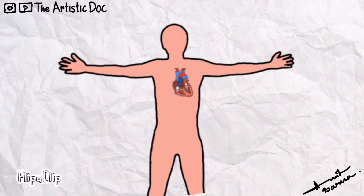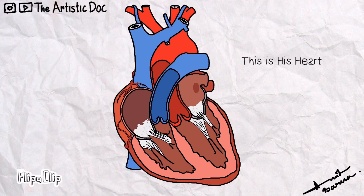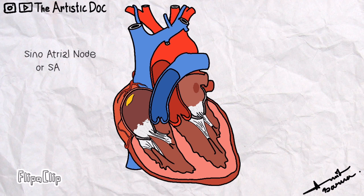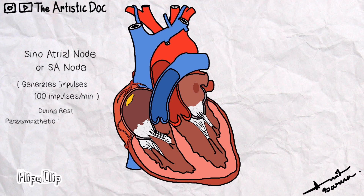This is Shanthan and this is his heart. Now see the parts of the conduction system inside his heart. This is the sinoatrial node or SA node. It is situated at the junction of the crista terminalis in the upper wall of the right atrium and the opening of the superior vena cava. It generates the impulse at the rate of 100 per minute. But during rest, the parasympathetic nervous system comes into play and inhibits the SA node, so the heart rate is normally 74 beats per minute.